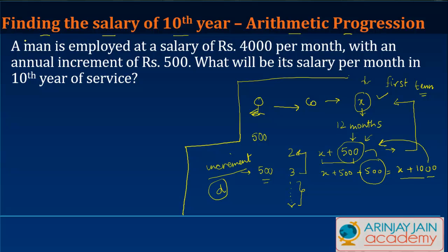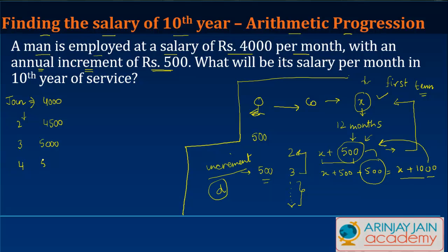The problem states: a man is employed at a salary of 4,000 rupees per month at the time of joining, with an annual increment of 500 rupees. So every year his salary increases by 500: in year 2 it becomes 4,500, in year 3 it becomes 5,000, in year 4 it becomes 5,500, and so on. The question asks: what will his salary per month be in the tenth year of service?